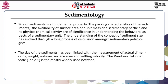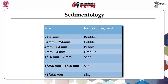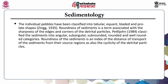The Wentworth-Udden scale is the most widely used notation. In this notation, the size of fragments which are more than 256 mm are termed as boulders. As we move down, between 64 to 256 mm we have cobbles, from 4 to 64 mm pebbles, and granules are the ones between 2 mm and 4 mm. Sand size ranges from 1/16 mm to 2 mm, and in this we have all the grades from coarse sand to medium to fine to very fine. Silt ranges from 1/16 mm to 1/256 mm, and below 1/256 mm we have the clays. The individual pebbles have been classified into tabular, equant, bladed, and prolate shapes.